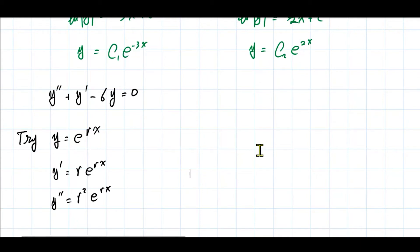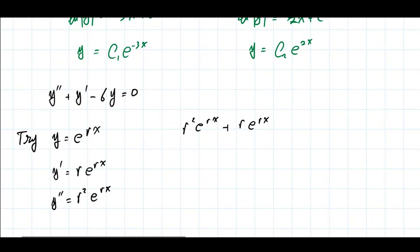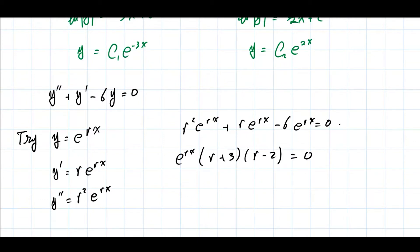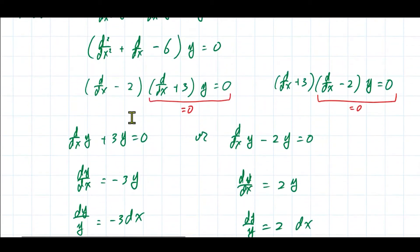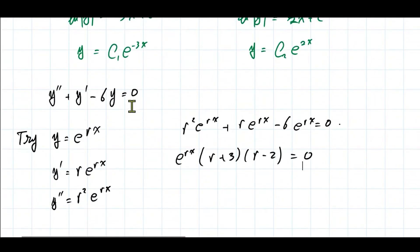We plug everything into the differential equation: r²·e^(rx) + r·e^(rx) - 6·e^(rx) = 0. Factor out e^(rx): e^(rx)(r² + r - 6) = 0, which factors as e^(rx)(r + 3)(r - 2) = 0. That looks very familiar — it's exactly what we got from the operator factoring approach.